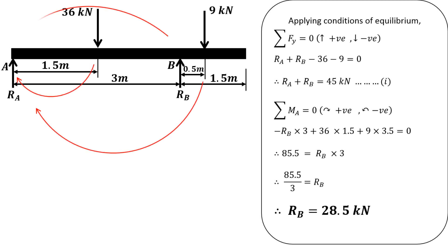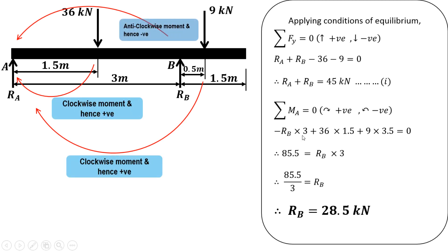Now summation of moments equals zero. Clockwise moments are positive; anticlockwise moments are negative. RB produces an anticlockwise moment about A, so it is minus RB times 3. The 36 kN point load produces a clockwise moment with perpendicular distance 1.5 meters: 36 into 1.5. The 9 kN point load also produces a clockwise moment about A with perpendicular distance 3 plus 0.5, that is 3.5 meters: 9 into 3.5, and this equals zero.